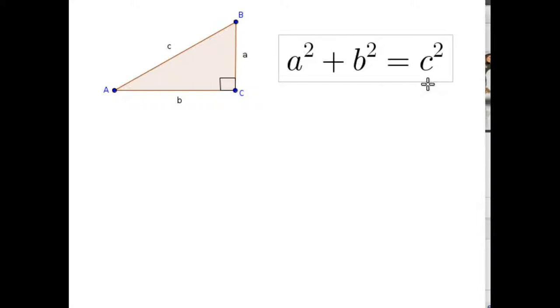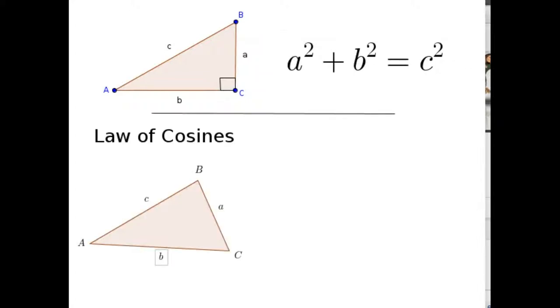What we're going to look at is the law of cosines as being a generalization of the Pythagorean Theorem. The Pythagorean Theorem actually talks about a relationship between three sides of a triangle that happens to be a right triangle.